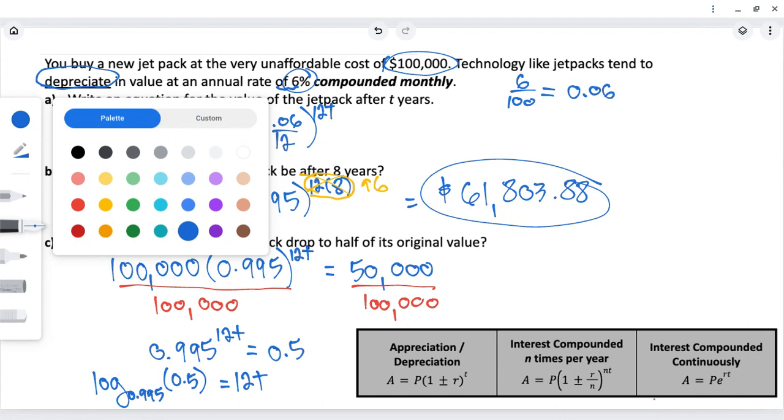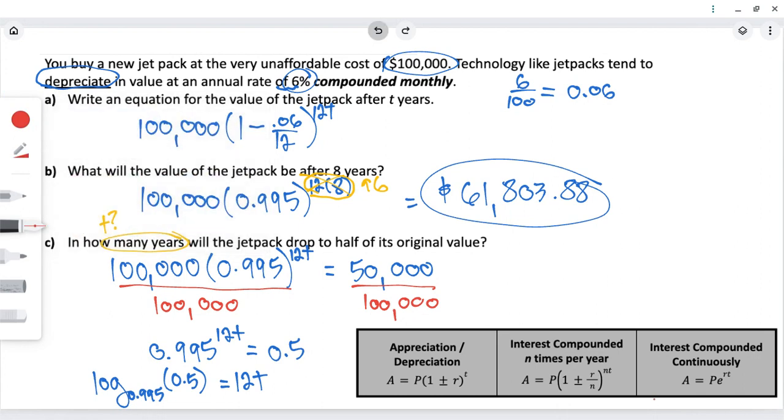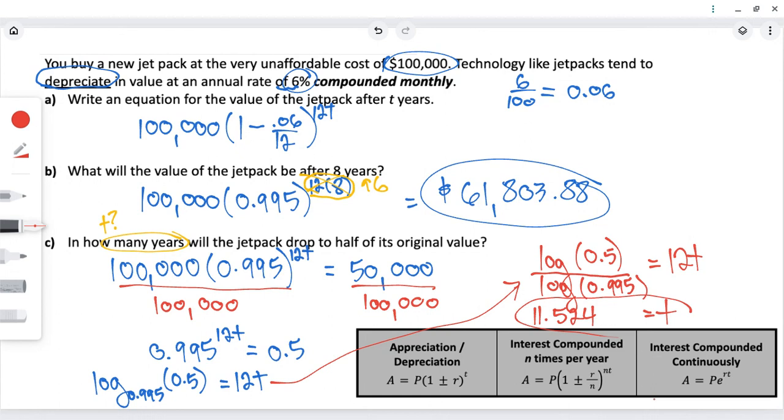To actually put this into the calculator, you need to use change of base rule, which just means you do log of the inside number, like the log button, like log base 10, divided by log of the base number. And this still is equal to 12T. So, once you get that answer, then just divide both sides by 12. So, you get 11.524 equal to T. And T is always defined in terms of years. So, that number is number of years.